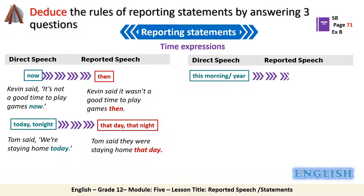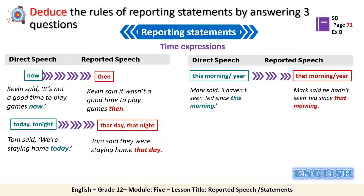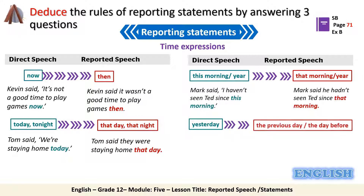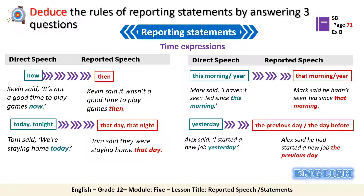Next, 'this morning' or 'this year' should be changed to 'that morning' or 'that year' — for example, 'Mark said I haven't seen Ted since this morning' becomes 'Mark said he hadn't seen Ted since that morning.' After that, 'yesterday' should be changed to 'the previous day' or 'the day before' — for example, 'Alex said I started a new job yesterday' becomes 'Alex said he had started a new job the previous day.'